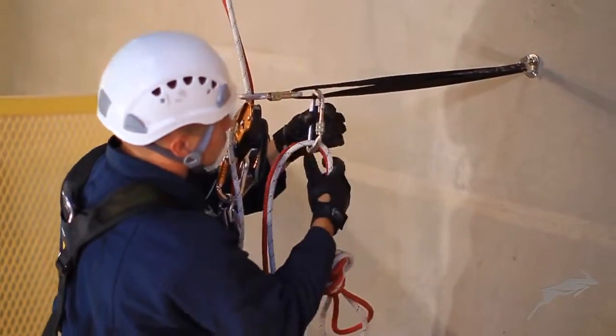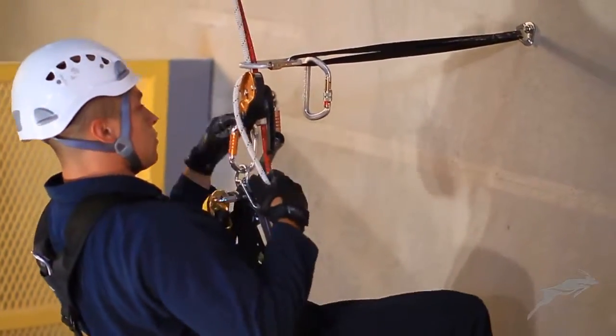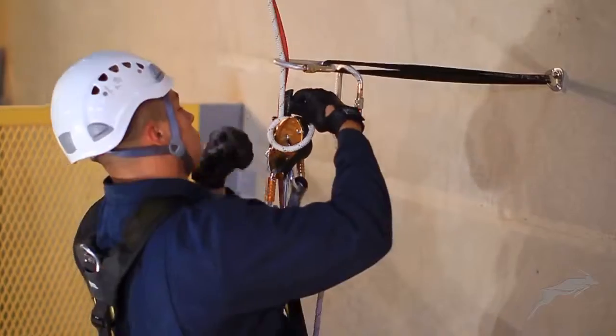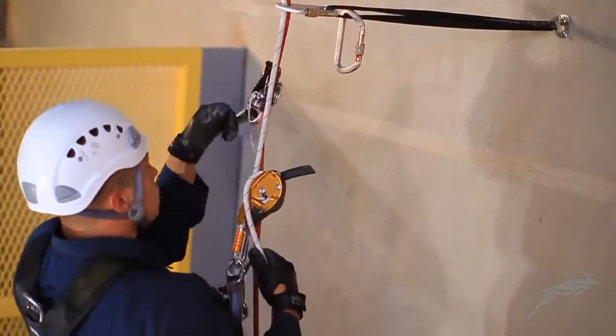Remove the ropes from the spare carabiner and untie the knots from the ropes below. Continue with the descent.